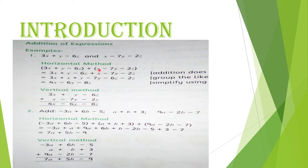Doosri bracket bhi plus sign ke saath open hogi, isliye plus x minus 7y minus 2z as it is rahega. Ab like terms katthe karen: 3x ke saath x ki term likhen, plus y ke saath minus 7y, aur minus 6z ke saath minus 2z.